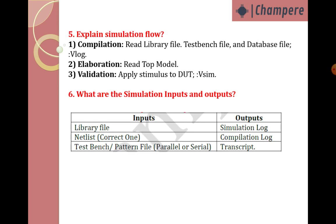To find out the mismatches and where they occur, those things we observe in simulation. Explain simulation flow — it mainly involves three stages. First, compilation: we read all files like library file, test bench file, and database file using VLOG command. Second, elaboration: we read the top model. Third, validation: we apply patterns to stimulus and find out if expected simulated values are matching or not. If mismatch occurs, we debug to find where it happened.